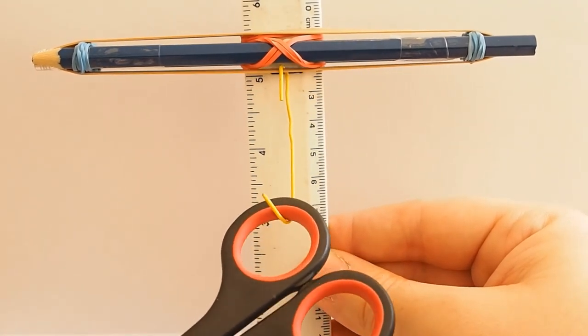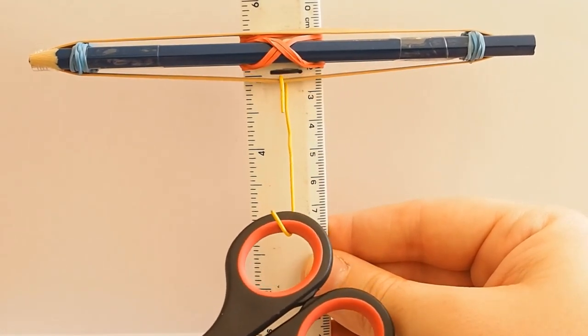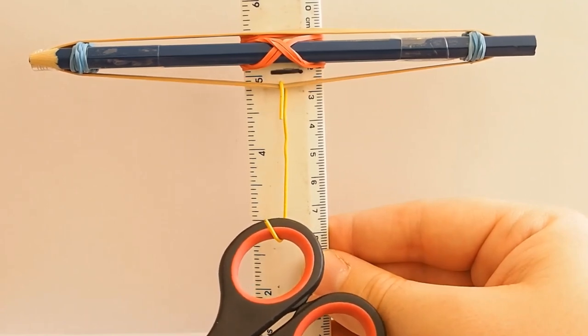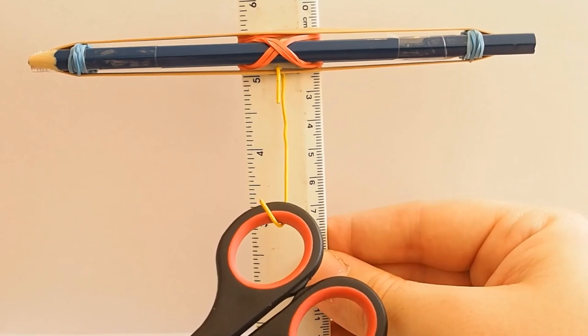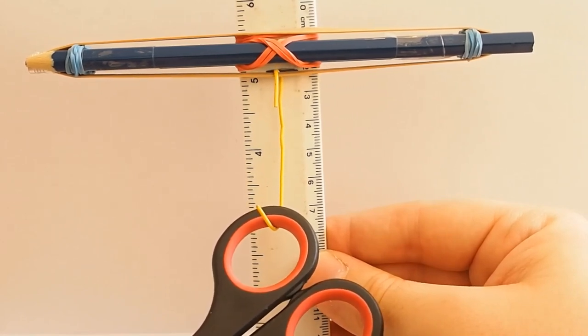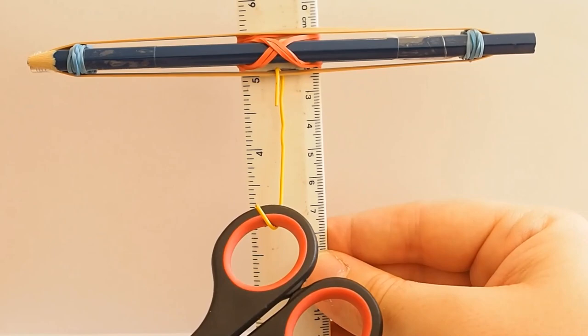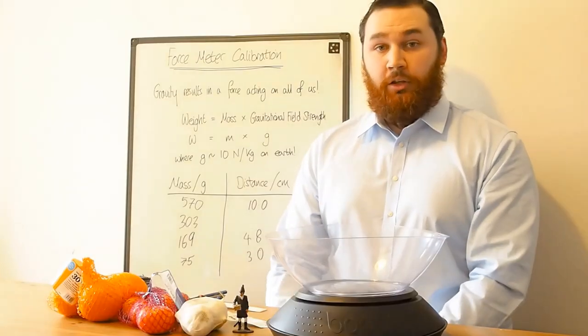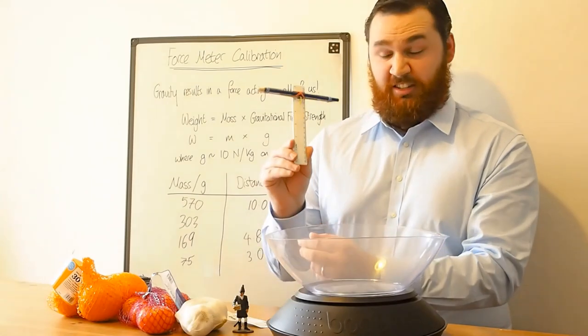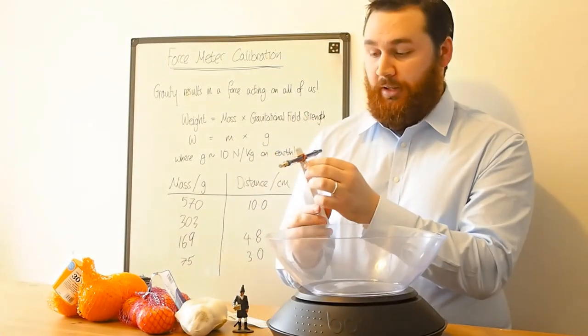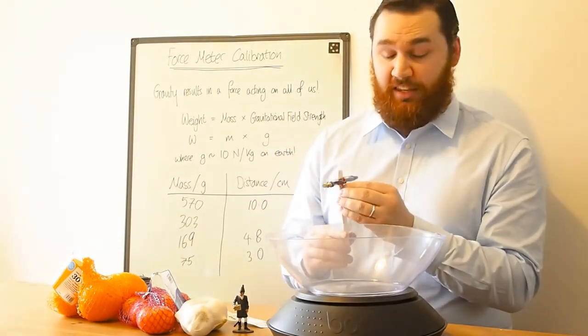And what we're going to make use of, we're going to make use of gravity to calibrate this. And calibration is just a technique we have to do to make our experiments, to make our values make sense. So we need to calibrate our force meter. This guy. And the way we're going to do it is we're going to use gravity to help us.